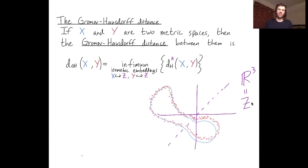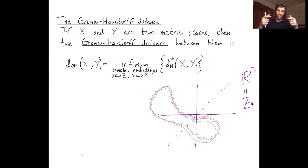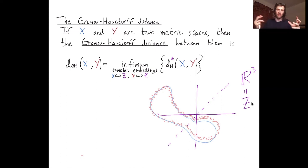The upshot is that the Hausdorff distance requires your spaces to be aligned already in some common metric space, but you can define a Gromov-Hausdorff distance between arbitrary metric spaces, even if they're not already aligned in any sense.